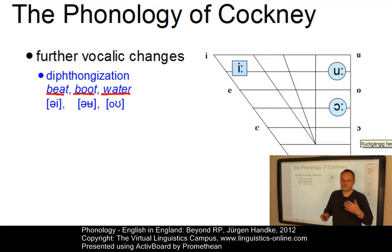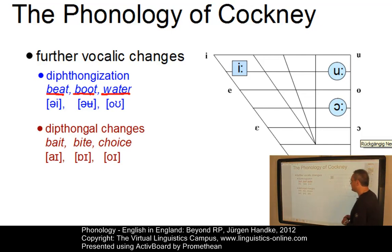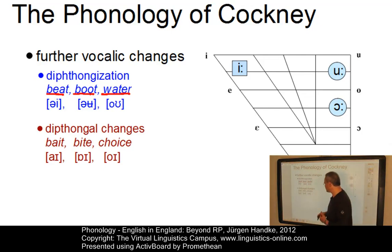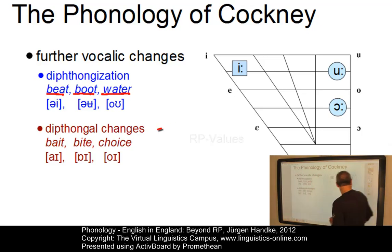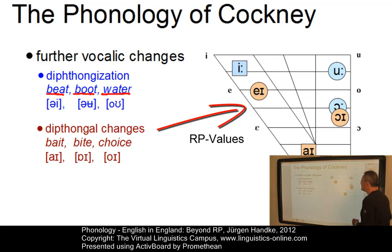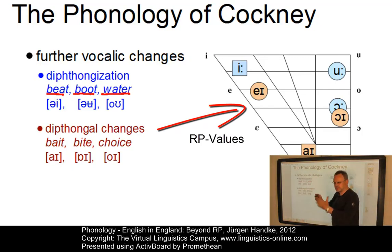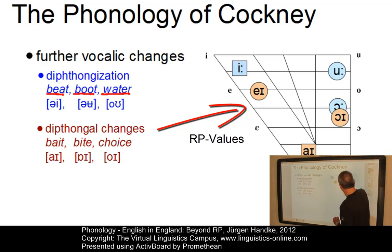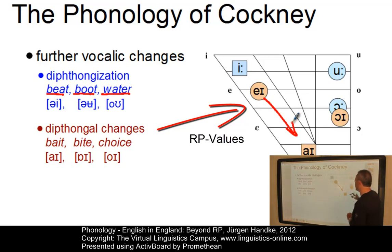A second feature concerns diphthongal changes. In RP you would pronounce the key words as 'bait,' 'bite,' and 'choice.' In Cockney there is an interesting transition of the onset of each of these diphthongs. For example, 'bait' would move its onset to 'bite,' and 'bite' by contrast would come out as 'boy.'